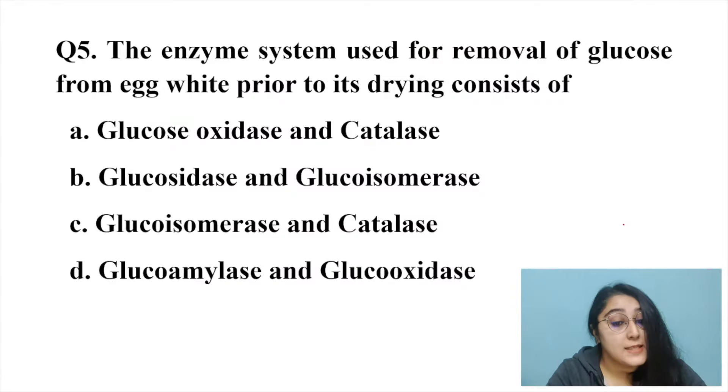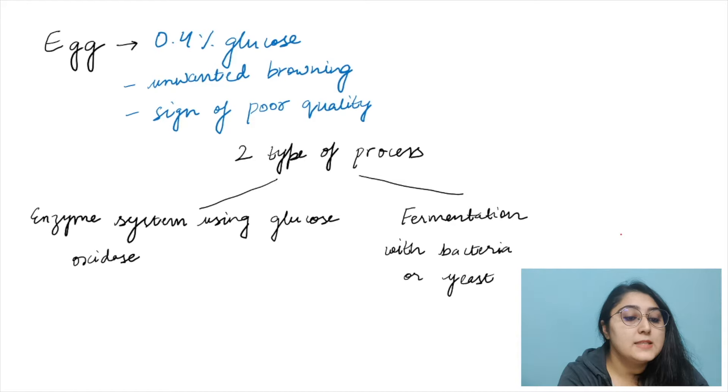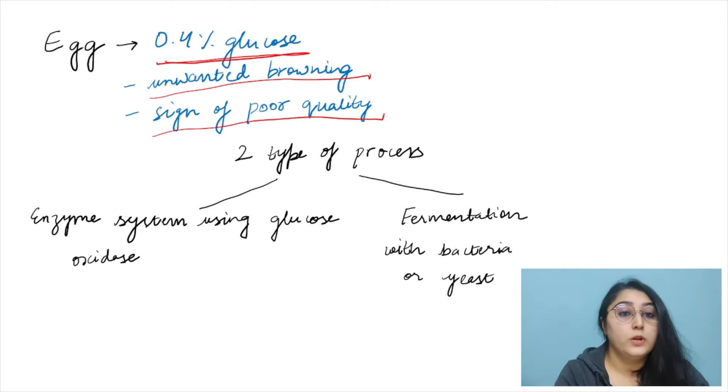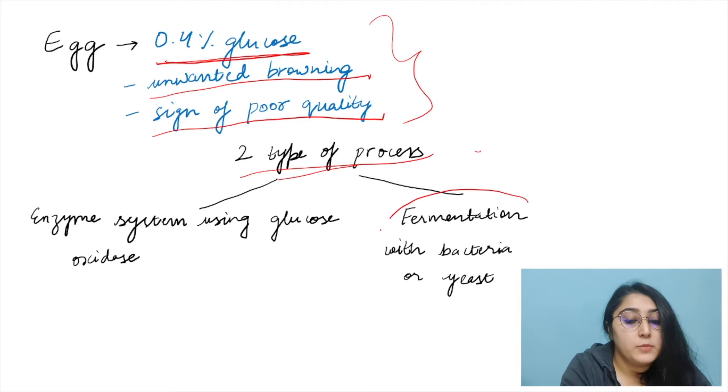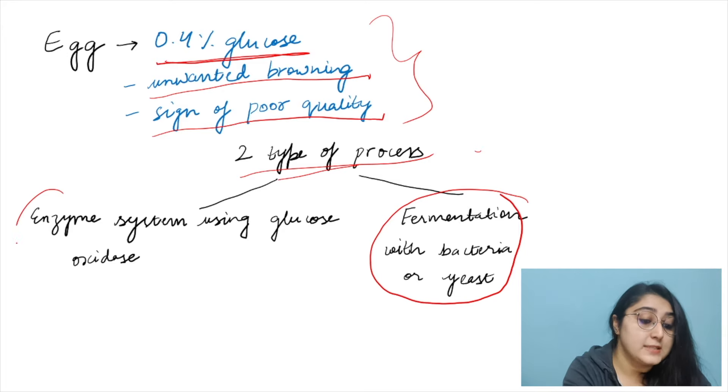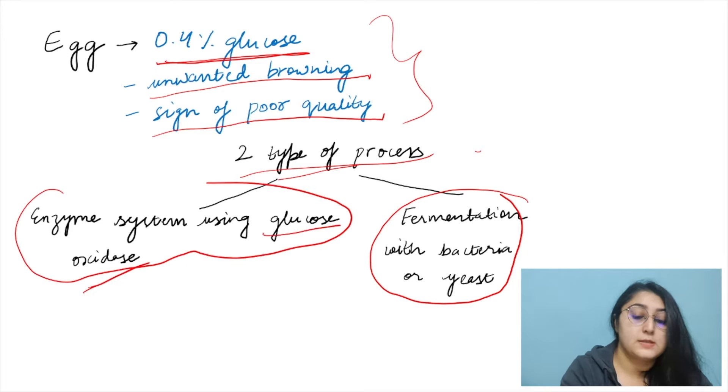Question five: the enzyme system used for removal of glucose from egg white prior to drying. Egg white contains around 0.4% glucose which may lead to unwanted browning — a sign of poor quality. To remove glucose there are two methods: fermentation using bacteria or yeast, or an enzyme system utilizing glucose oxidase.